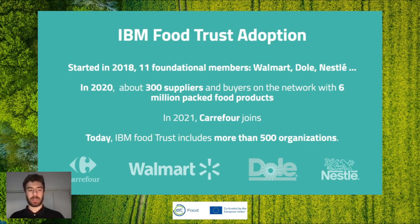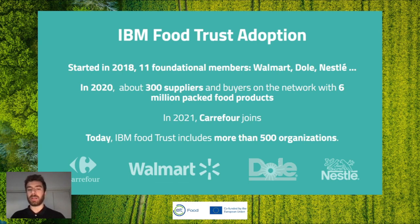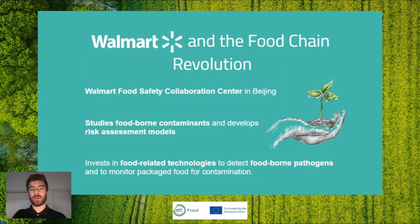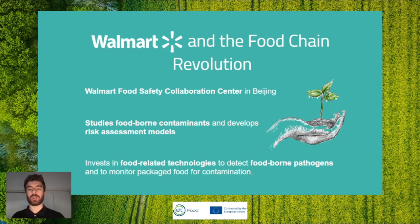Walmart ran pilots tracking chicken and microgreens, and then actually implemented blockchain for far more food products. Today, IBM Food Trust includes more than 500 organizations, one of the biggest being Walmart — a giant in the space and always at the forefront of innovation. I want to spend a few minutes talking about Walmart's role in driving forward the revolution of the food chain.